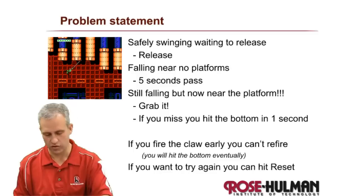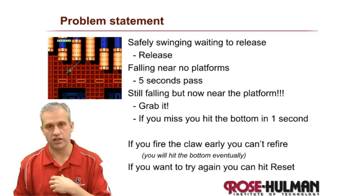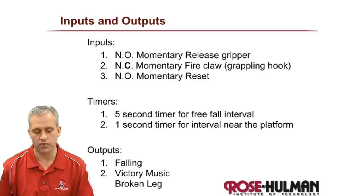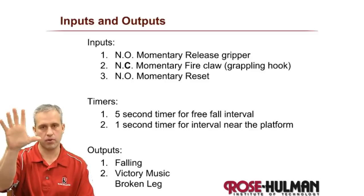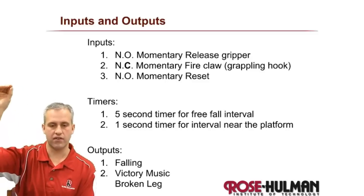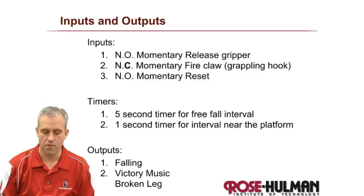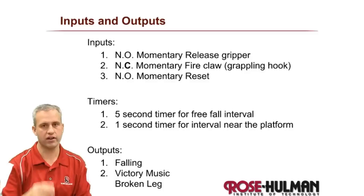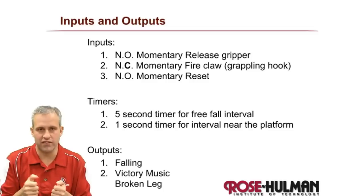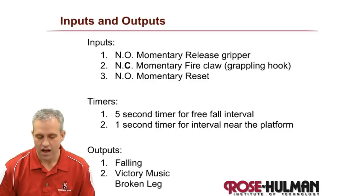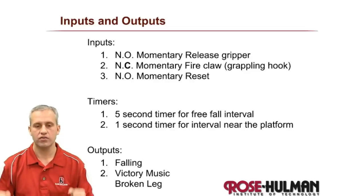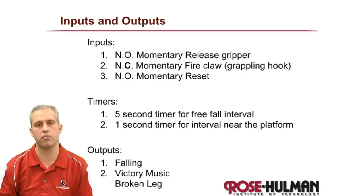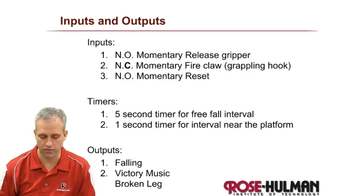So we're going to make a finite state machine. I made it for you because we're going to focus on implementation. The inputs are: I1 is 'let go of the gripper' — initially you're swinging and you release to begin your falling process. I2 is 'fire the claw' — really it's a grappling hook — which you fire while falling at the right time. I3 is 'reset video game' because if you die you want to reset. There are two timers: a five-second timer for free fall through open space, and then a one-second window where you're near the platform and can grab it.